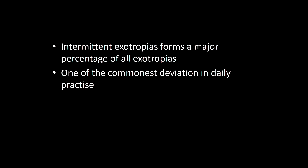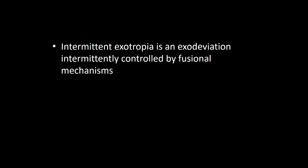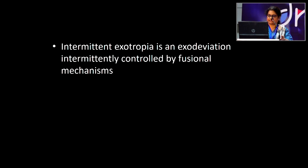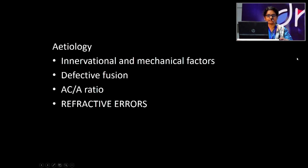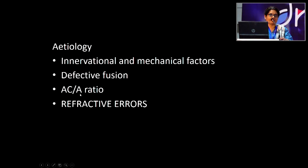I'll be speaking on intermittent exotropias. Intermittent exotropia forms a major percentage of all exotropias and is one of the commonest deviations we see in daily practice. It is an exodeviation that is intermittently controlled by fusional mechanisms. Though various etiologies are discussed, the exact etiology is unknown, but it is very commonly associated with refractive errors. Defective fusion and problems with the accommodative convergence ratio are also mentioned.